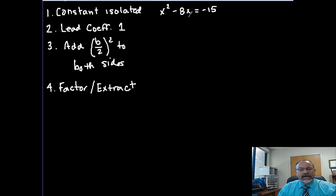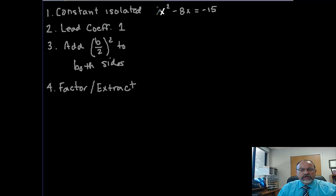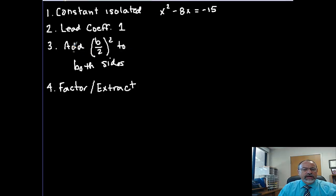So, the first thing we want to do when we're solving using this method is we want to take the constant and isolate it. So we move the constant over to the other side. It's over here on the right all by itself. I then need to check and make sure that the leading coefficient is a 1, which it is.